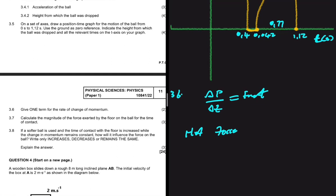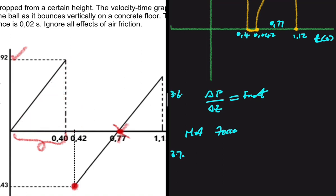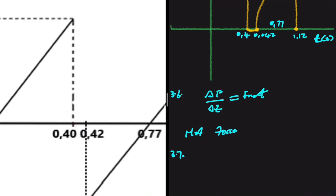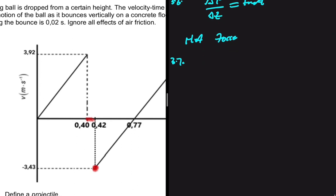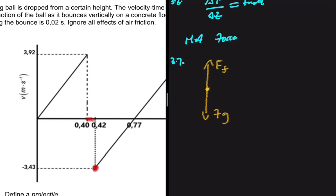For 3.7, calculate the magnitude of the force exerted by the floor on the ball during the time of contact. Let's draw a free body diagram of the ball while it is in contact with the floor. We have Fg acting downward, and the floor pushes the ball upward — that is the force exerted by the floor. So Fnet = F_floor − Fg, since they act in opposite directions.